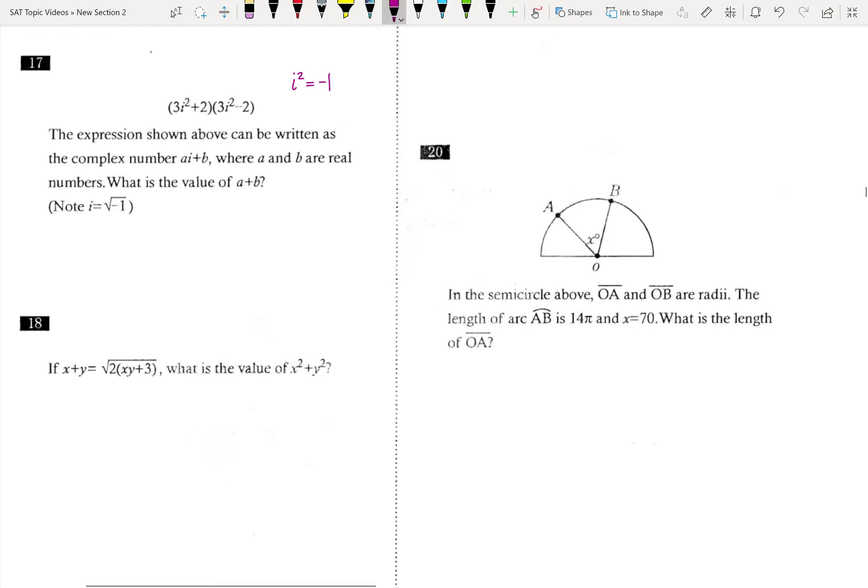Number 17. What you need to remember is i squared equals negative one. So I'm going to FOIL this, but then I'm going to have to substitute that in. In other words, I'm going to get 9i to the fourth